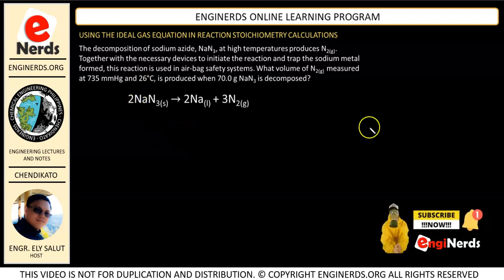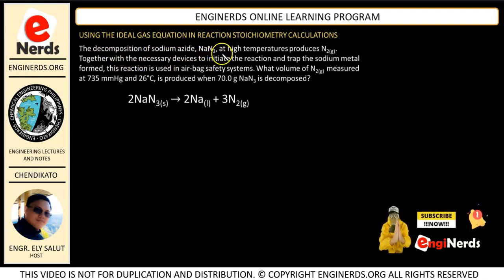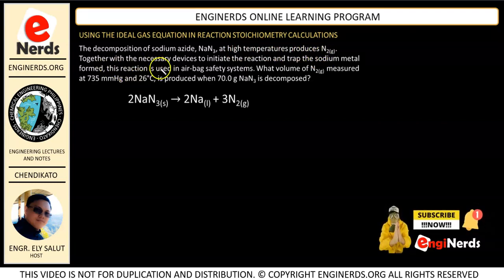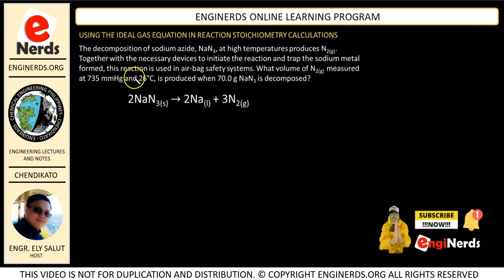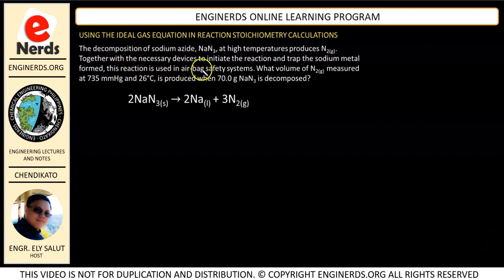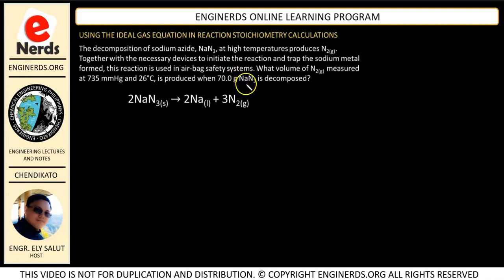So let us first read our question. The decomposition of sodium azide, NaN3, at high temperatures produces nitrogen gas, N2. Together with the necessary device to initiate the reaction and trap the sodium metal formed, this reaction is used in airbag safety systems. What volume of nitrogen measured at 735 mmHg and 26 degrees Celsius is produced when 70 grams of NaN3 is decomposed? So we have our reaction right here, and as you can see, our reaction is already balanced.